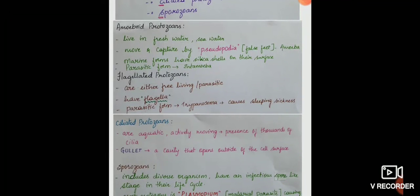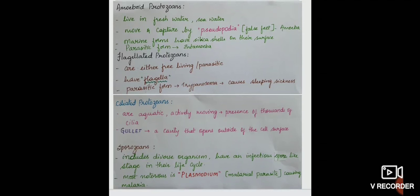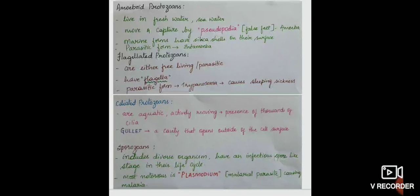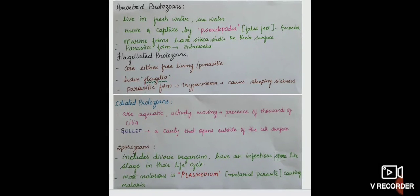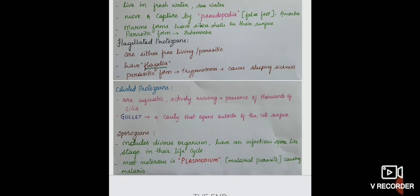Flagellated protozoans are either free-living or parasitic. They have flagella. Flagella is given in the name, that is flagellated protozoans. Parasitic form of flagellated protozoans, one example is Trypanosoma which causes sleeping sickness.